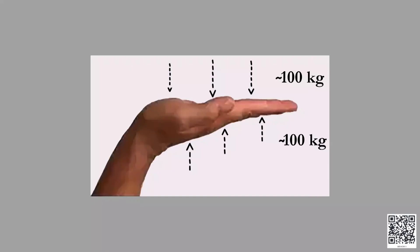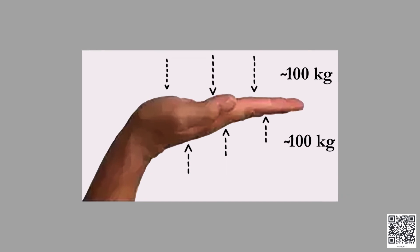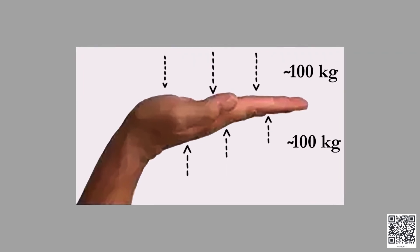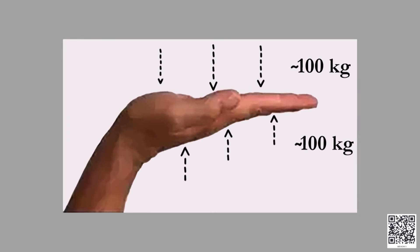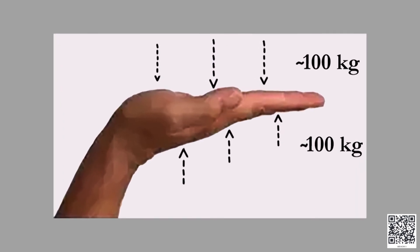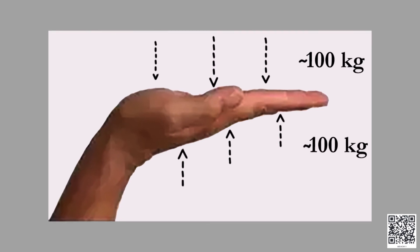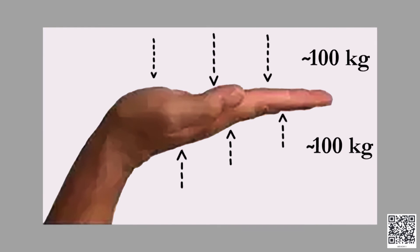Let us take another example. Let us say the atmospheric air exerts a force of 100 kg weight on our palm. There is an equal force exerted by air acting upwards on the lower surface of the palm. The two forces cancel each other out. Hence, we do not feel the pressure of air on our hand or on our palm.